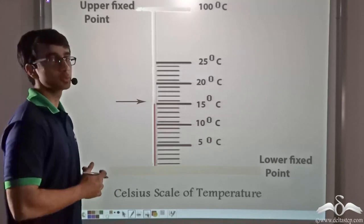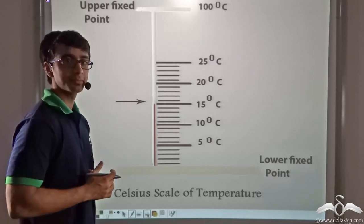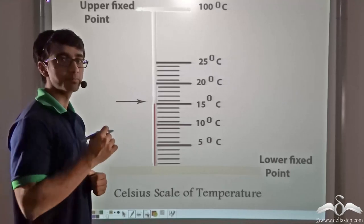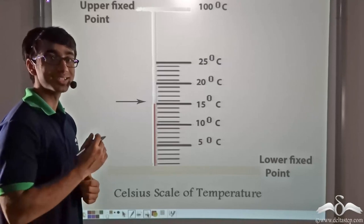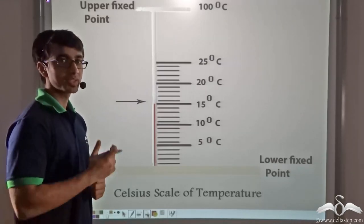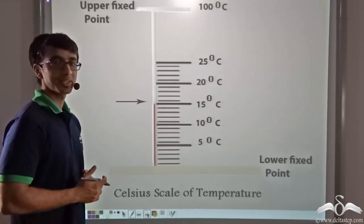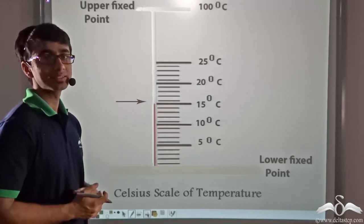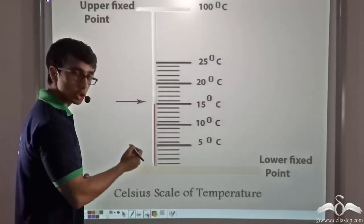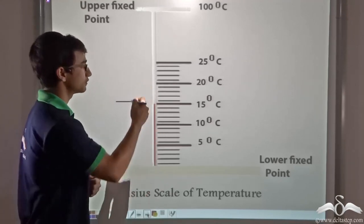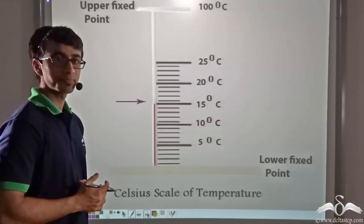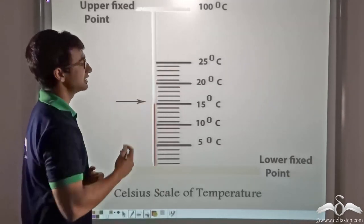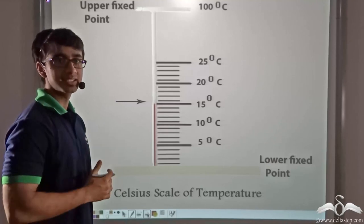Next, the thermometer is placed in boiling water. The liquid column rises to a certain height and after expansion becomes fixed at one particular point — the steam point, which is the boiling point of pure water, marked as 100 degrees Celsius. Now we have two points: 100 degrees Celsius and zero degrees Celsius. Since the change in height of the liquid is directly proportional to the change in temperature, the distance between these two points can be equally graded into 100 equal parts.